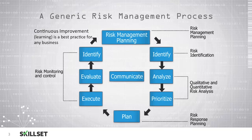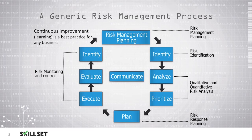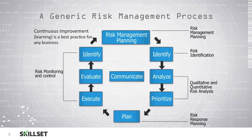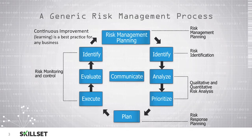We will then evaluate the effectiveness of the controls, identify any areas for improvement, and then begin the process again. A proper risk management process involves continuous improvement where we are constantly learning how to improve our risk management — this is a best practice for any organization. Communication is in the middle of our process; it is important that all individuals involved communicate throughout all of the steps.